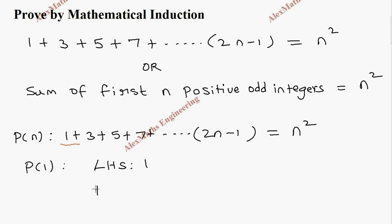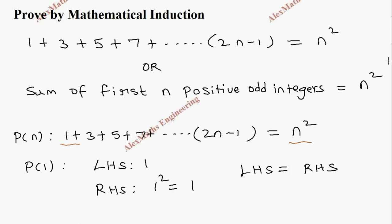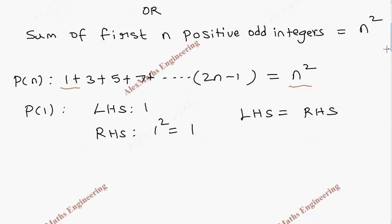For P of 1, we take the left hand side — it means only the first term, which is 1. On the right hand side we substitute the value of n as 1, so 1 squared which is 1. We find LHS and RHS are the same, so LHS equals RHS, and we can say P of 1 is true.